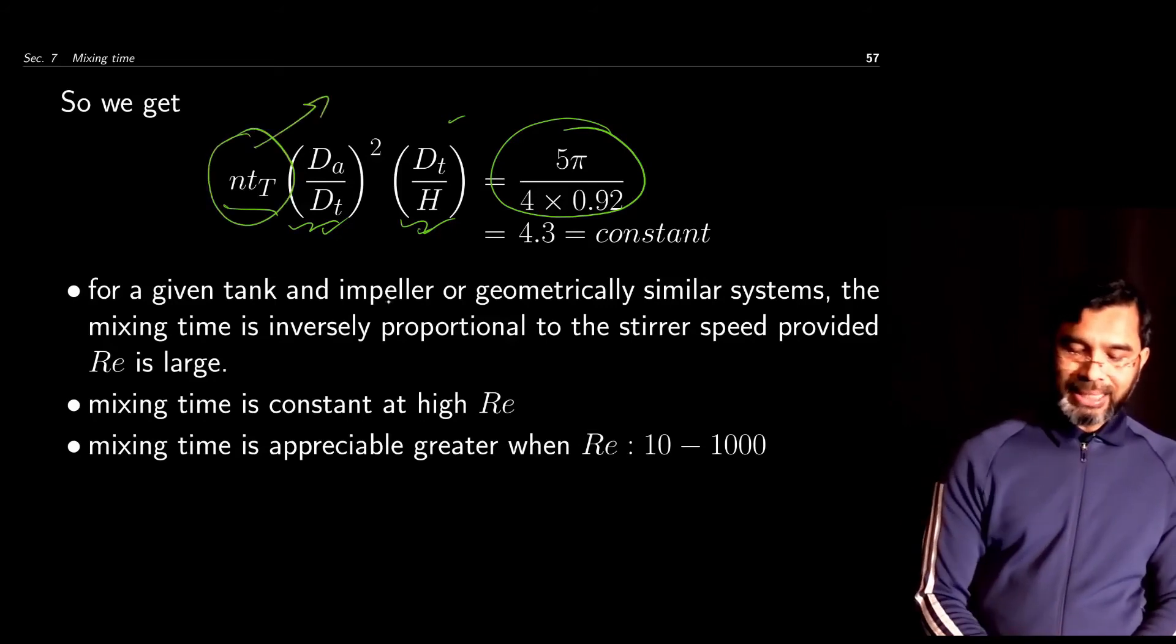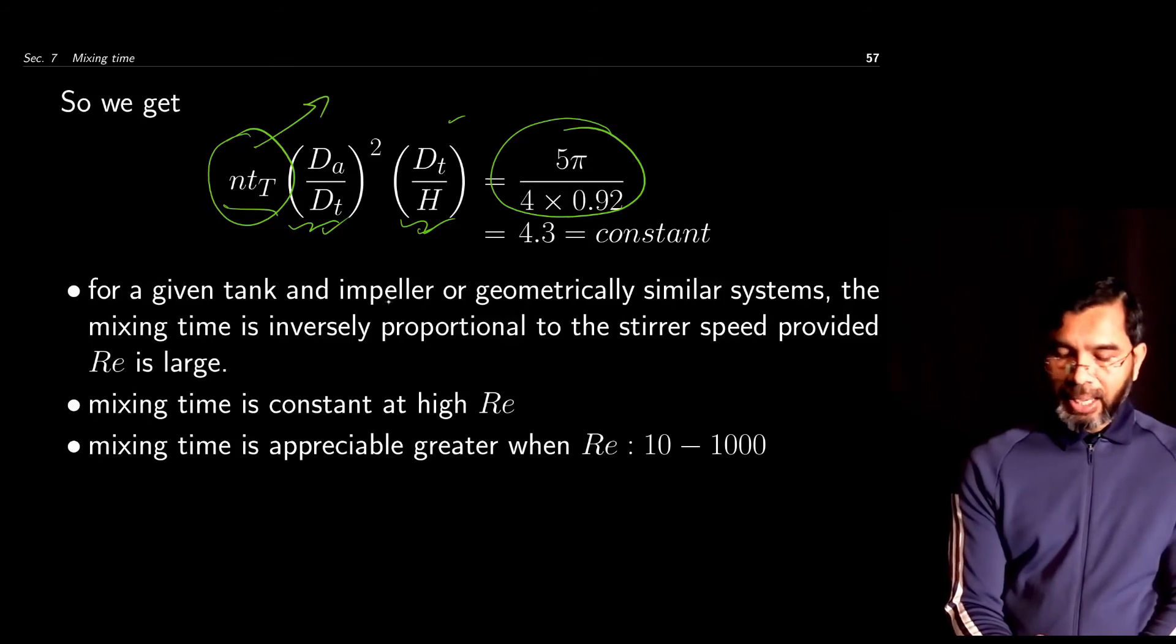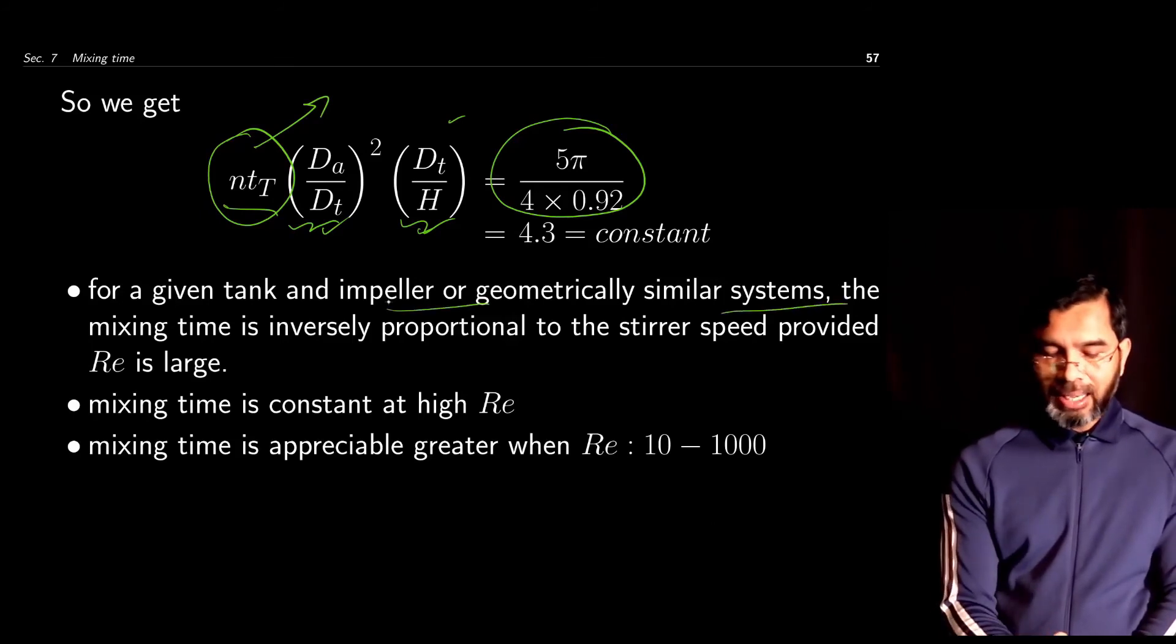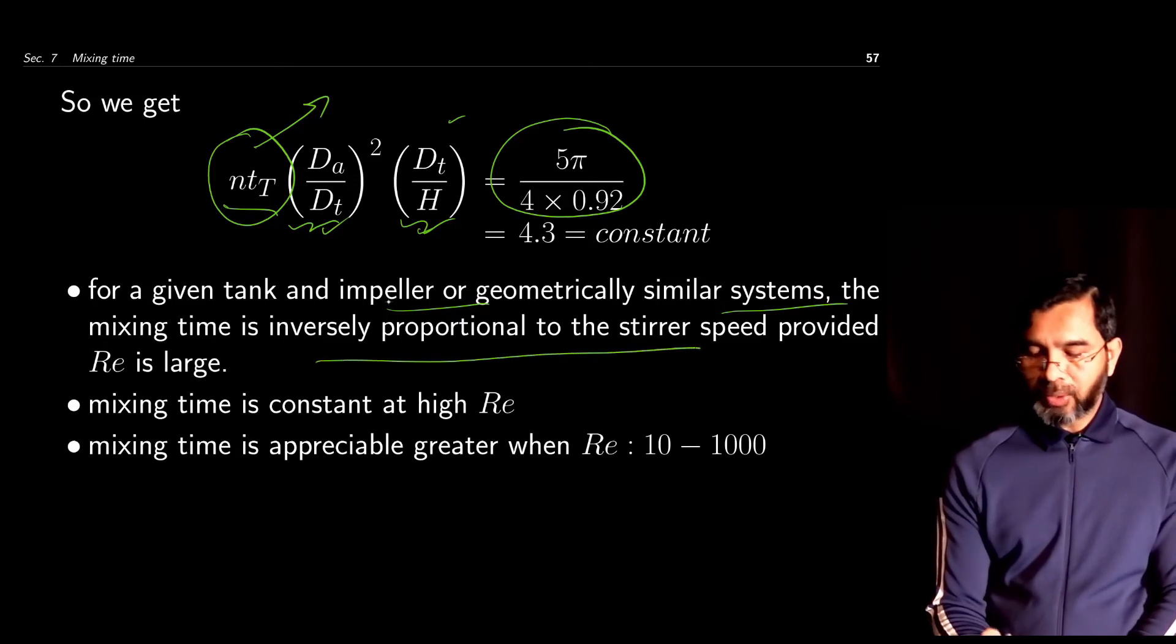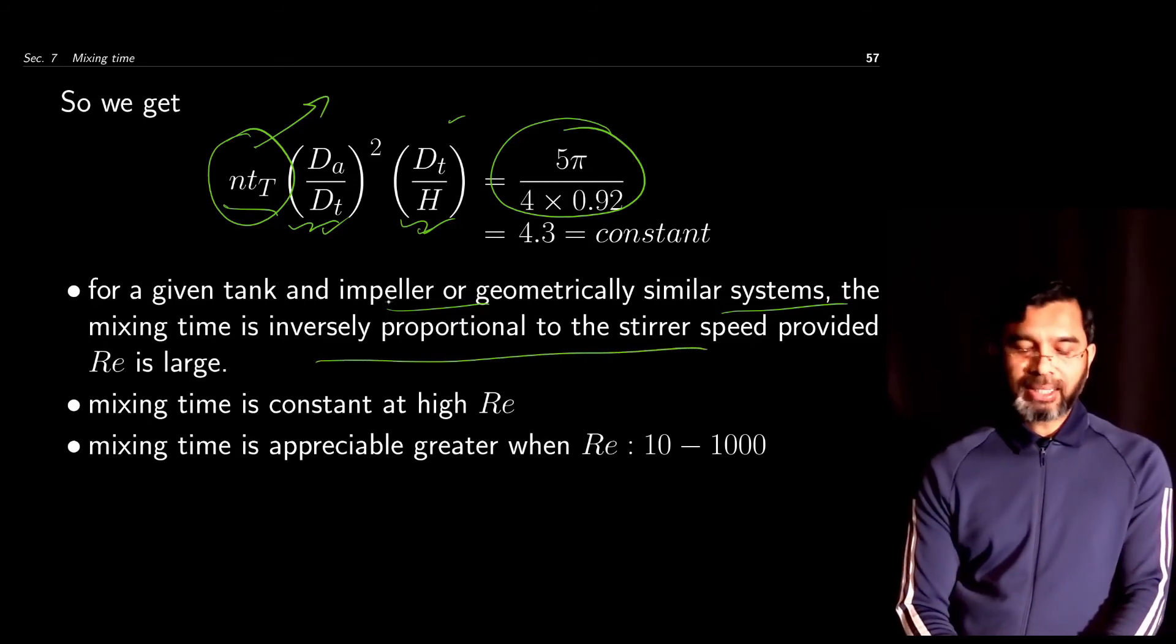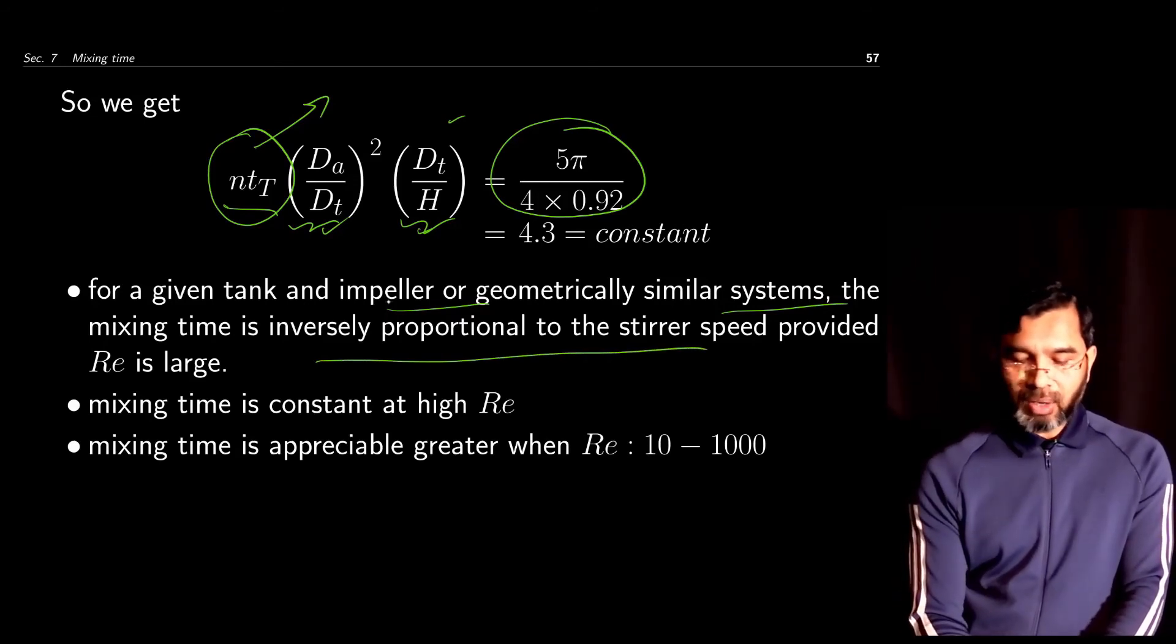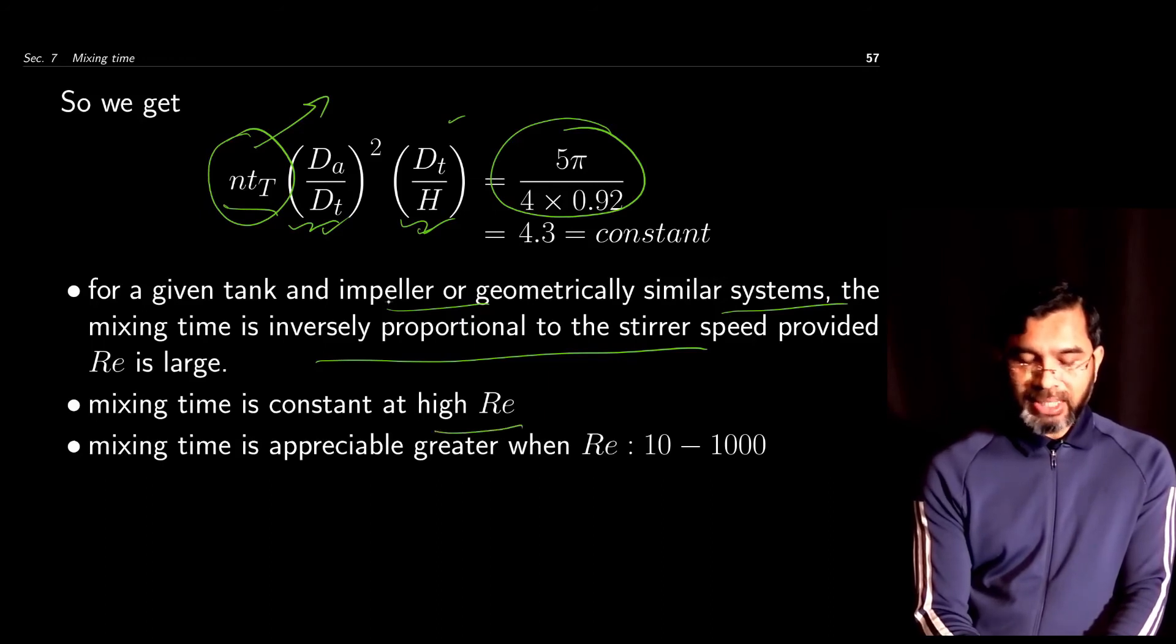For a given tank and impeller or geometrically similar systems, the mixing time is inversely proportional to the stirrer speed provided that Reynolds number is large. Mixing time is constant at high Reynolds number.